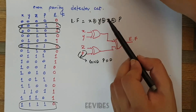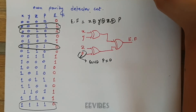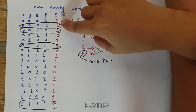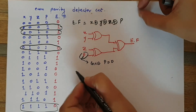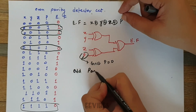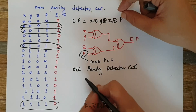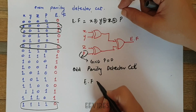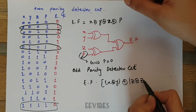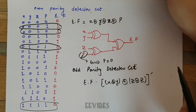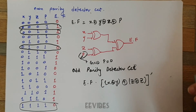This circuit is for the even parity detector. If you want an odd parity detector circuit, all you need to do is take the complement of this function and implement it. The complement of the XOR gate is the XNOR gate, so the odd parity detector can be implemented using the XNOR gate. If you have any questions, drop them in the comment section — thank you for watching.